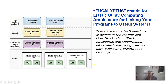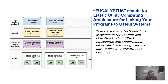Eucalyptus stands for Elastic Utility Computing Architecture for Linking Your Programs to Useful Systems. It is an open source Linux-based project. You can take at least three Linux machines to make an AWS-compliant cloud. This is useful because AWS from Amazon is costly, but in a lab or teaching community — such as IITs or NITs — you can use three Linux machines to build your own AWS-compatible cloud. This is a very useful software.